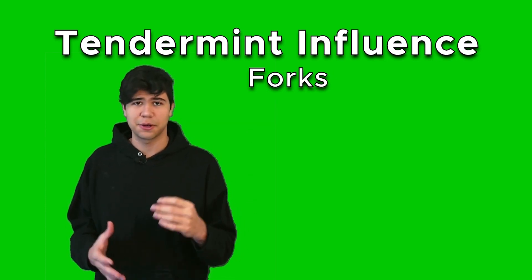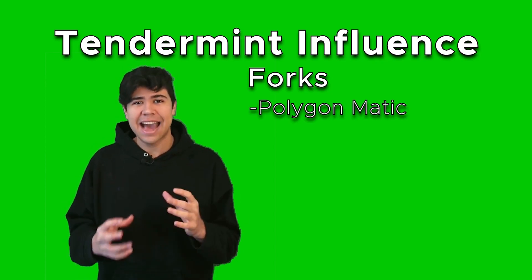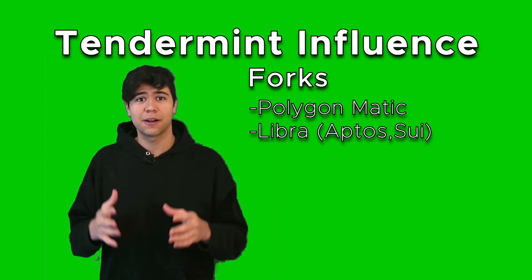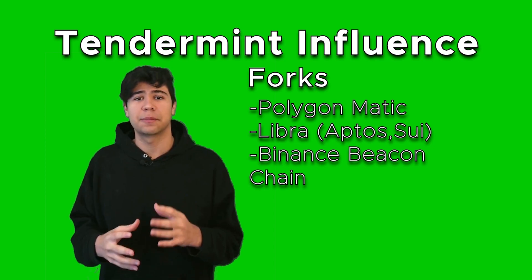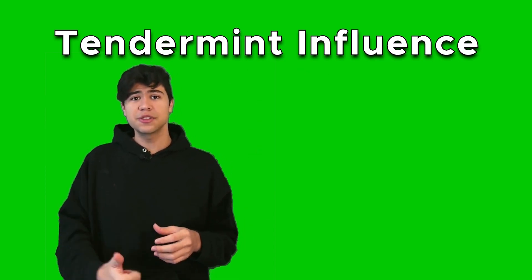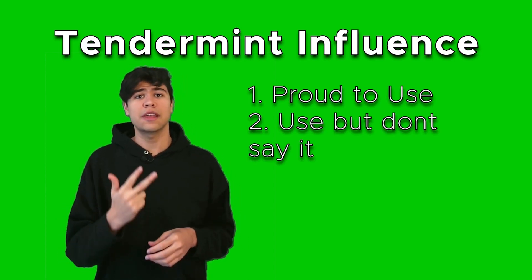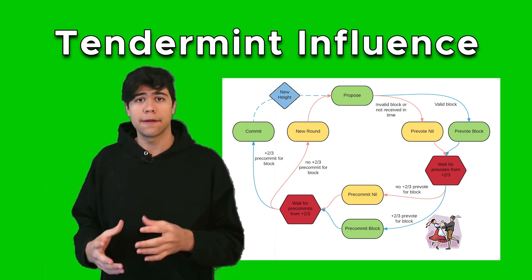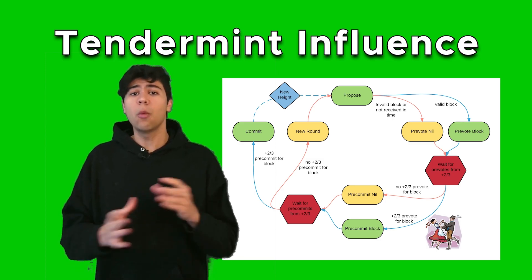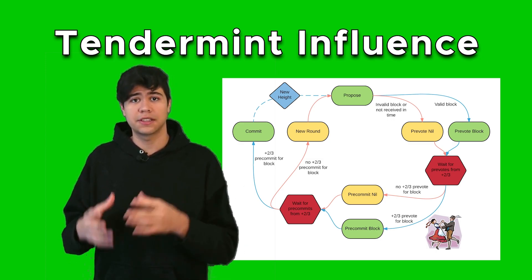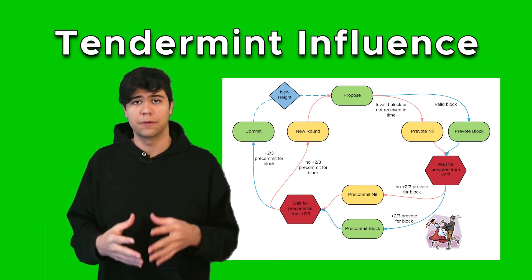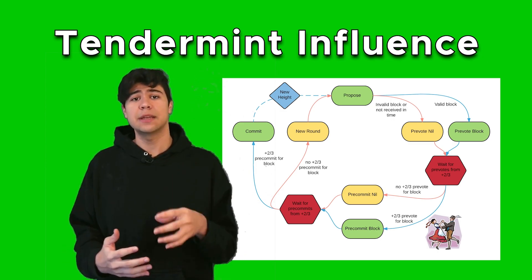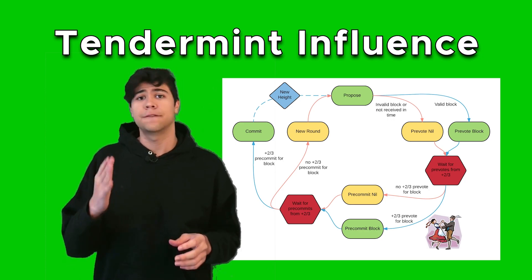There are also projects that have forked Tendermint. The second largest L2 on Ethereum, Polygon (Matic), uses a modified version of Tendermint called Peppermint. The failed Facebook project Libra, which broke off into Aptos and Sui, originally used Tendermint. And Binance's beacon chain uses Tendermint. Most crypto projects either use Tendermint and are proud of it, use it quietly, or have used a modified fork. And if they don't use it directly, they took heavy inspiration from it — since Tendermint is the base algorithm for proof-of-stake, you have to study it to make your own consensus engine.